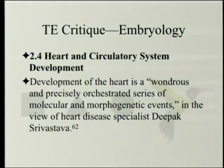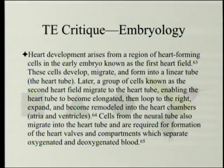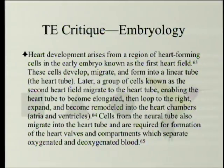Heart and circulatory system development: development of the heart is a wondrous and precisely orchestrated series of molecular and morphogenetic events, in the view of heart disease specialist Deepak Srivastava. Heart development arises from heart-forming cells known as the first heart field, which develop, migrate, and form into a linear tube — the heart tube. A group of cells known as the second heart field then migrate to the heart tube, enabling it to become elongated, loop to the right, expand, and become remodeled into the heart chambers: atria and ventricles. Cells from the neural tube also migrate into the heart tube and are required for formation of the heart valves and compartments separating oxygenated and deoxygenated blood.